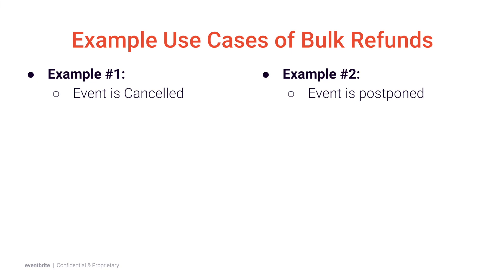Which leads me to example number two: postponing an event. Sometimes in order to make good with your attendees, the best course of action may be to go ahead and refund attendees. And once you have a new date set, allow your attendees to decide if they can participate in the future event. Leveraging this functionality, you can refund all attendees in bulk.